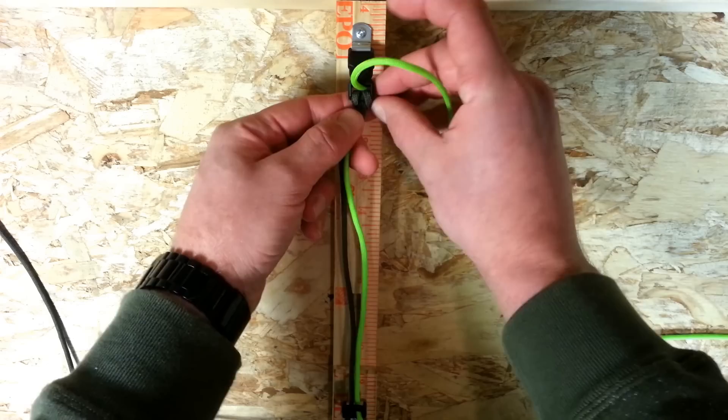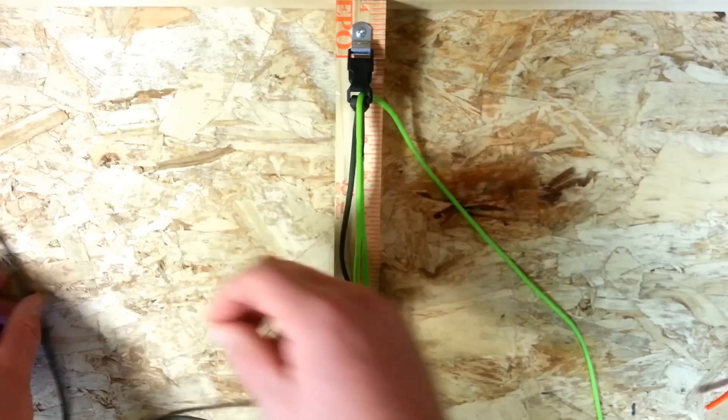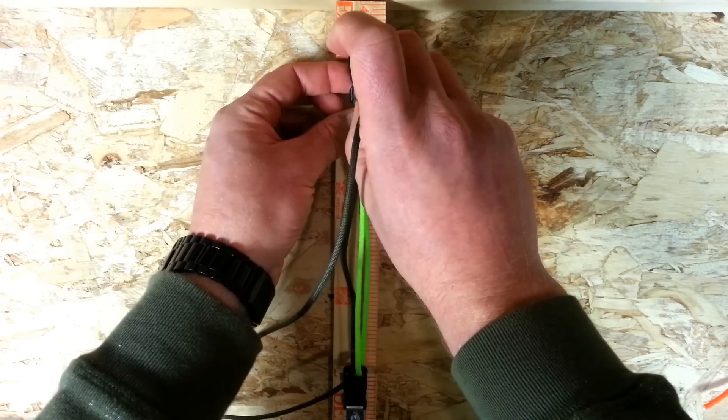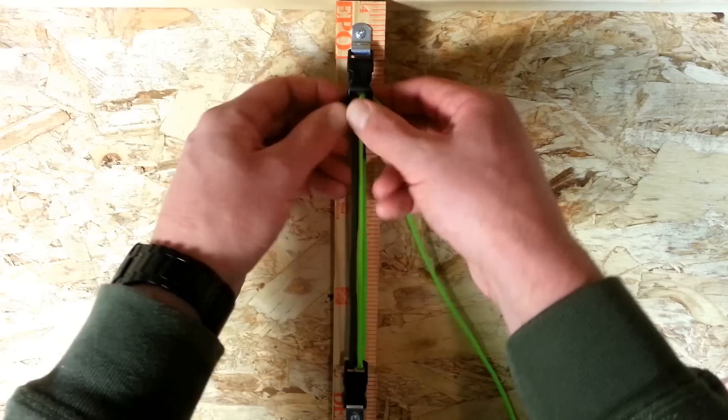And that's where flattening the ends comes into play because it makes this a whole lot easier. Trust me that is not nearly as easy to feed through a regular thickness end. It's just been sealed with a lighter. Flat end again through there on the left. Make sure your cords aren't crossed over or anything. That's it.